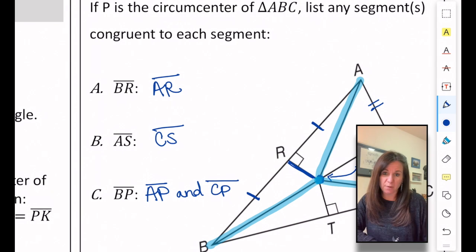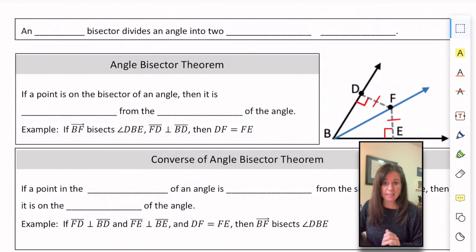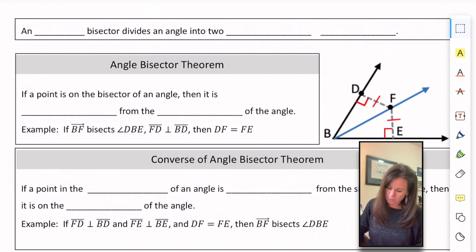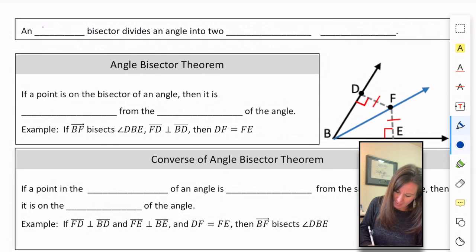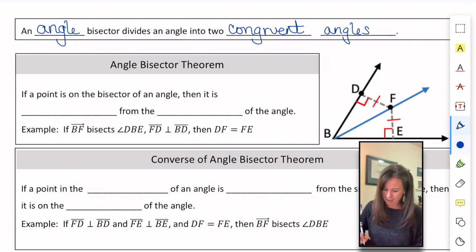Now we're going to flip over and look at angle bisectors. In the first part of this lesson we were looking at perpendicular bisectors inside a triangle; now we're going to talk about angle bisectors inside a triangle. An angle bisector divides an angle into two congruent angles — it cuts it right in half.